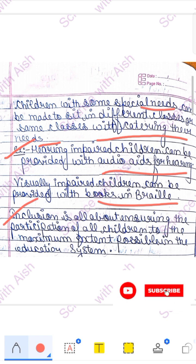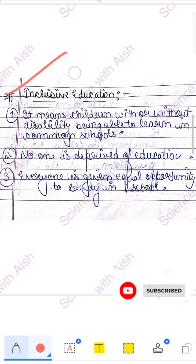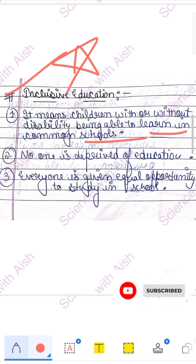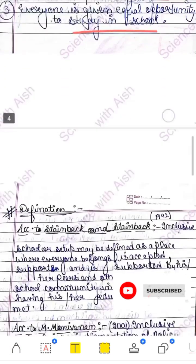Inclusion is all about ensuring the participation of all children to the maximum extent possible in the education system. Inclusion means every type of child participates in every activity and gets opportunity. The simple definition of inclusive education in three points: first, children with or without disability being able to learn in common schools; second, no one is deprived of education; third, everyone is given equal opportunity to study in school.